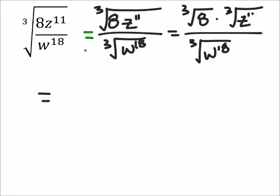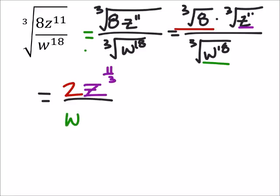This equals, the cube root of 8 is just 2. But z to the power of 11, 11 is not a multiple of 3, so I'll make that a fraction: z to the power of 11 thirds. We'll divide this by w to the power of 18. 18 is a multiple of 3, so this becomes w to the power of 18 thirds.